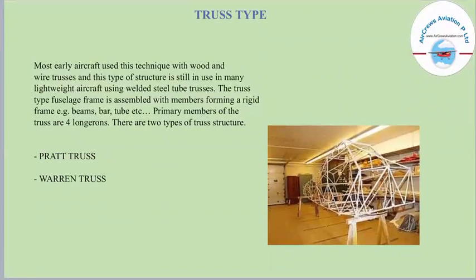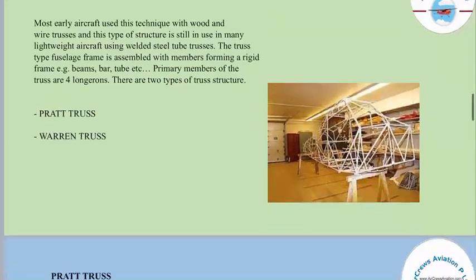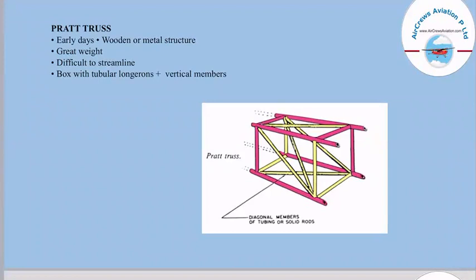The truss type was used in most early aircraft with wood and wire trusses, and is still used in many lightweight aircraft using welded steel tube trusses. The truss type fuselage frame is assembled with members forming a rigid frame — for example beams, bars, and tubes. Primary members are four longerons. The Pratt truss was used in the early days, typically a wooden or metal structure providing great weight, though difficult to streamline. It features tubular longerons plus vertical members.